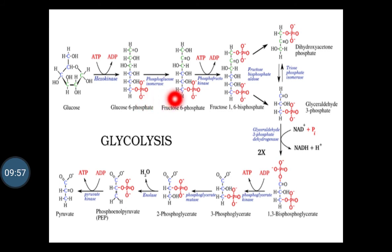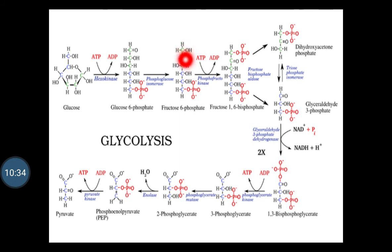Step 2 is called the isomerization of glucose 6-phosphate, which gets converted to fructose 6-phosphate. Glucose 6-phosphate is reversibly isomerized to fructose 6-phosphate by the enzyme phosphohexoisomerase. This reaction involves a shift of the carbonyl oxygen from C1 to C2, thus converting aldose to ketose. In this way, the formation of fructose 6-phosphate from glucose 6-phosphate takes place.